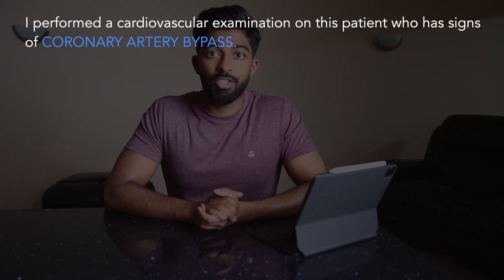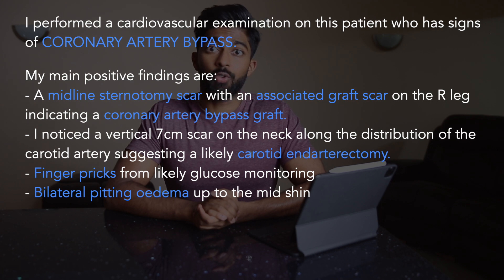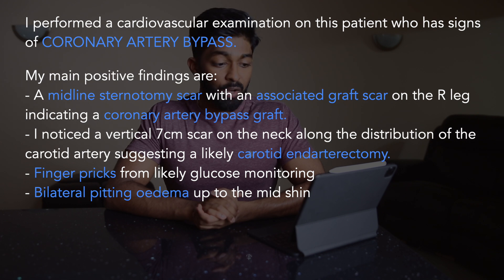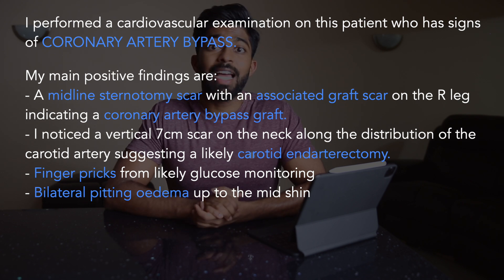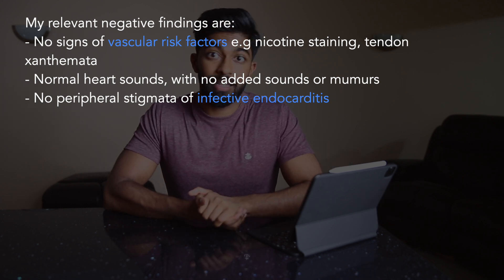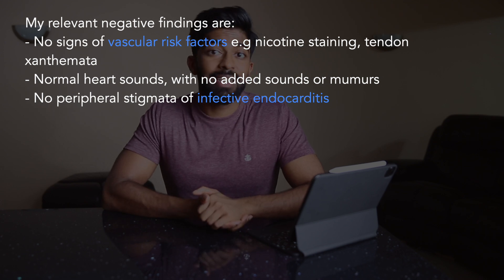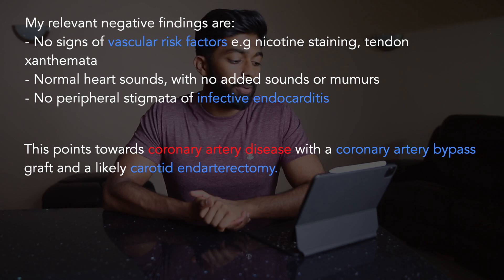I performed a cardiovascular examination on this patient who has signs of a coronary artery bypass. My main positive findings are: a midline sternotomy scar with an associated graft scar on the right leg indicating a coronary artery bypass graft, a vertical 7 cm scar on the neck along the distribution of the carotid artery suggesting a likely carotid endarterectomy, finger prick marks from likely blood glucose monitoring, and bilateral pitting oedema up to the level of the mid shin. My relevant negative findings are no signs of other vascular risk factors such as nicotine staining or tendon xanthomata, normal heart sounds with no added sounds or murmurs, and no peripheral stigmata of infective endocarditis. This points towards coronary artery disease with a coronary artery bypass graft and a likely carotid endarterectomy. Typical VIVA follow-up questions include risk factors for coronary artery disease — such as smoking, obesity, hypertension — classified as modifiable and non-modifiable.